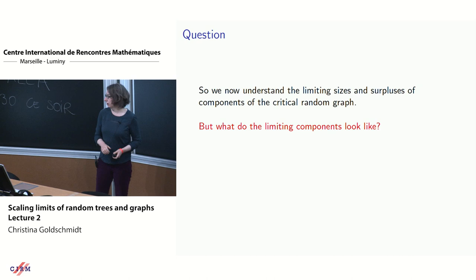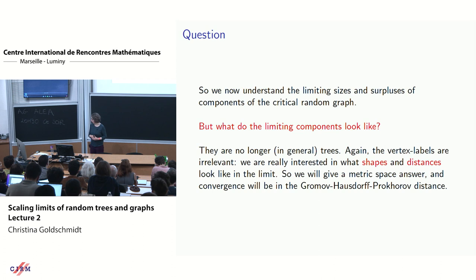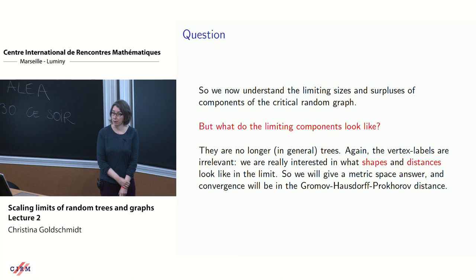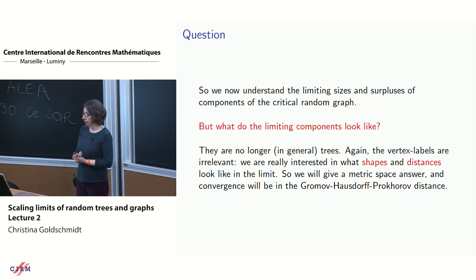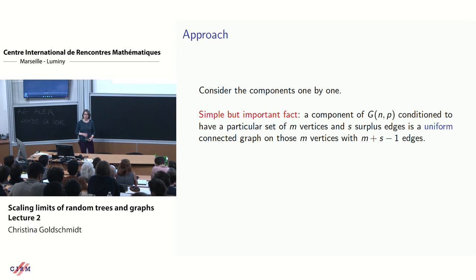The theme of the first lecture was metric space convergence for random trees. Can we do something similar here? In general, components of the critical random graph aren't necessarily trees — some may be, others won't be. We don't care about vertex labels but about geometric properties: shapes and distances. So I'll give a metric space answer using the Gromov–Hausdorff–Prokhorov distance.